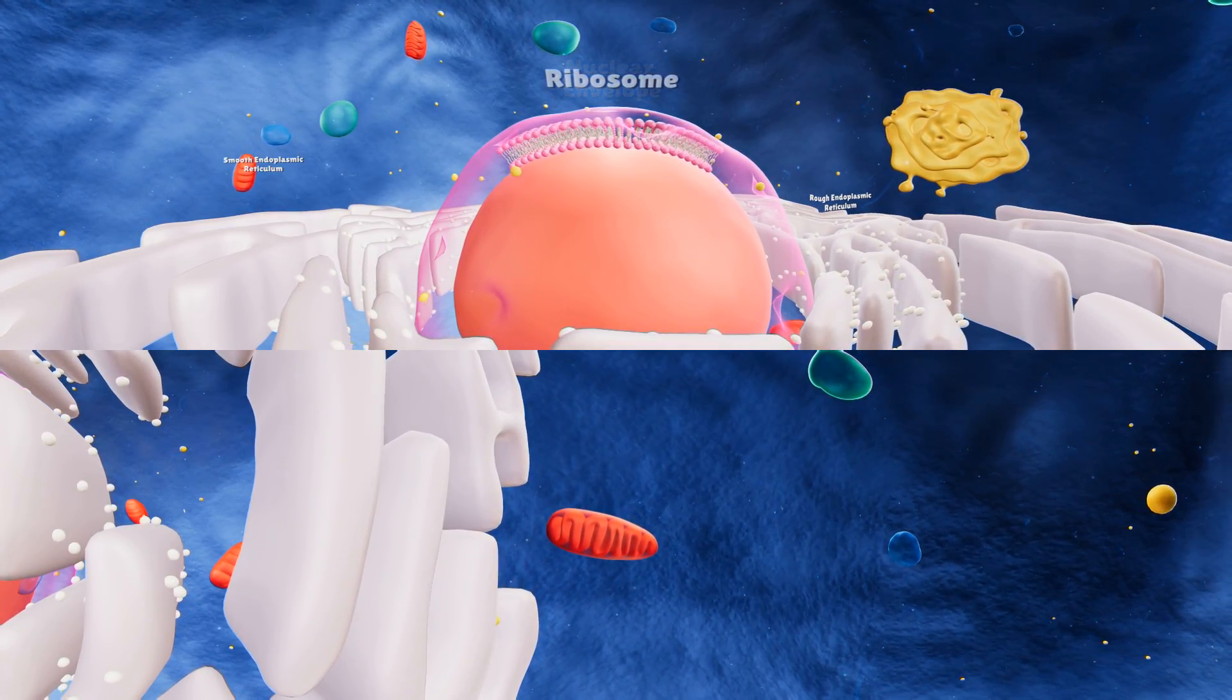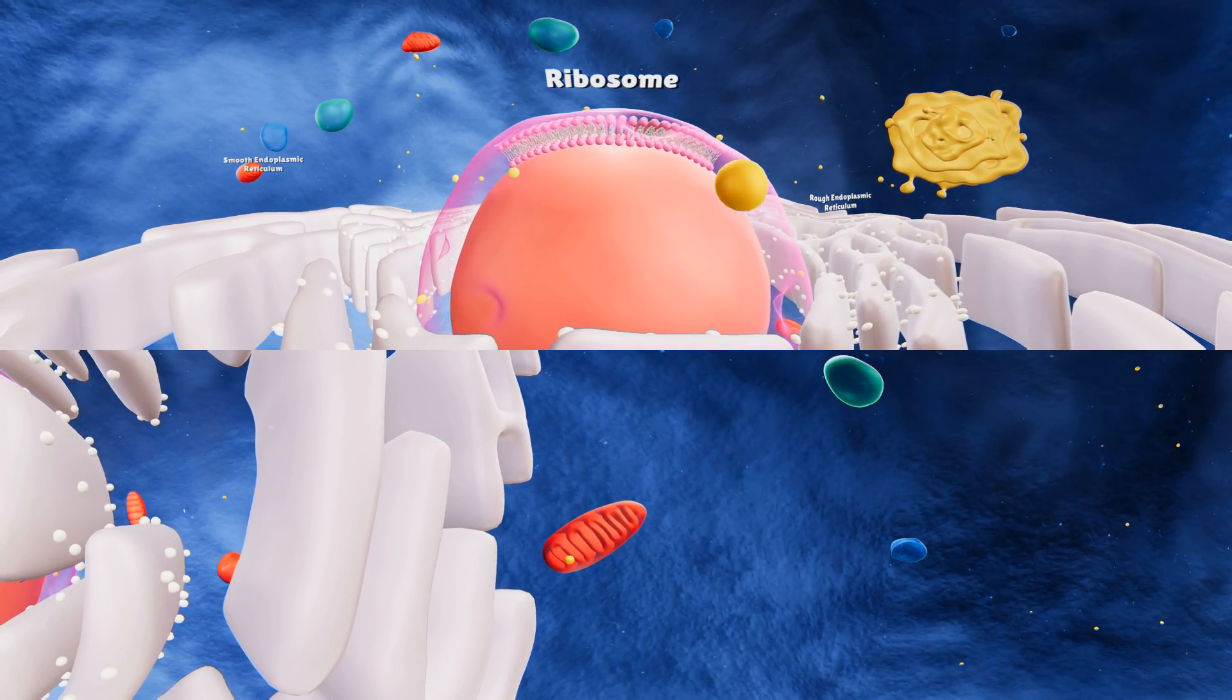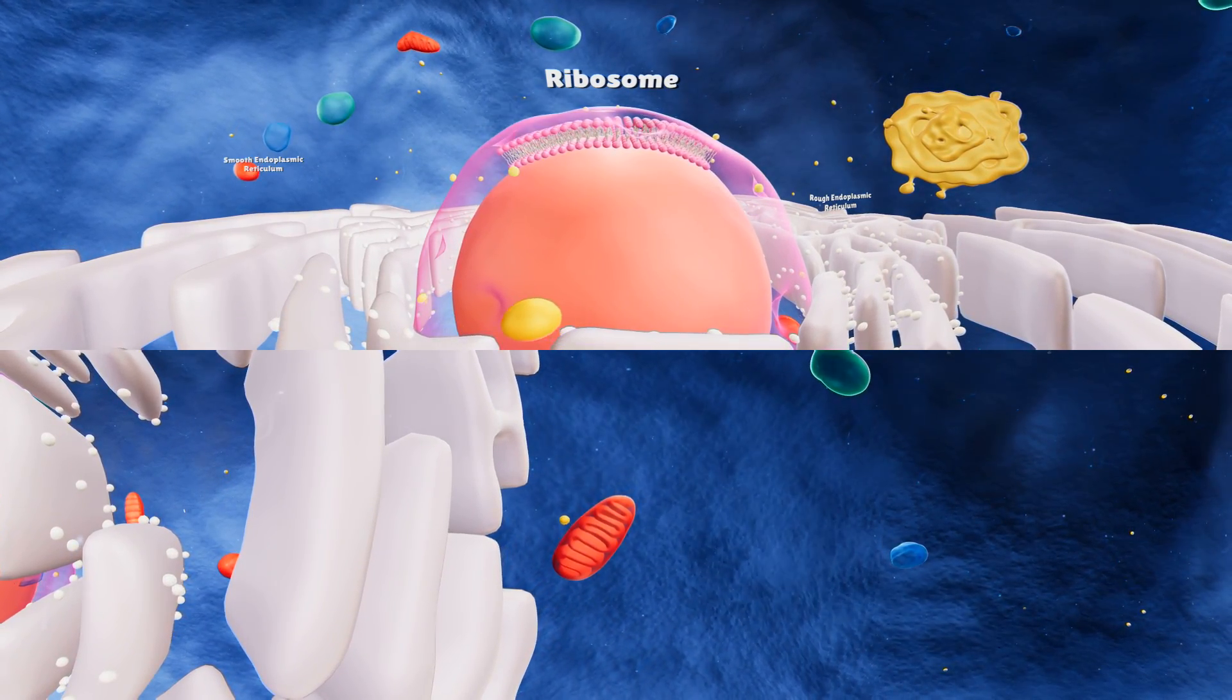We can see small bodies on the nuclear membrane. These are ribosomes again. Proteins are synthesized at the ribosome.